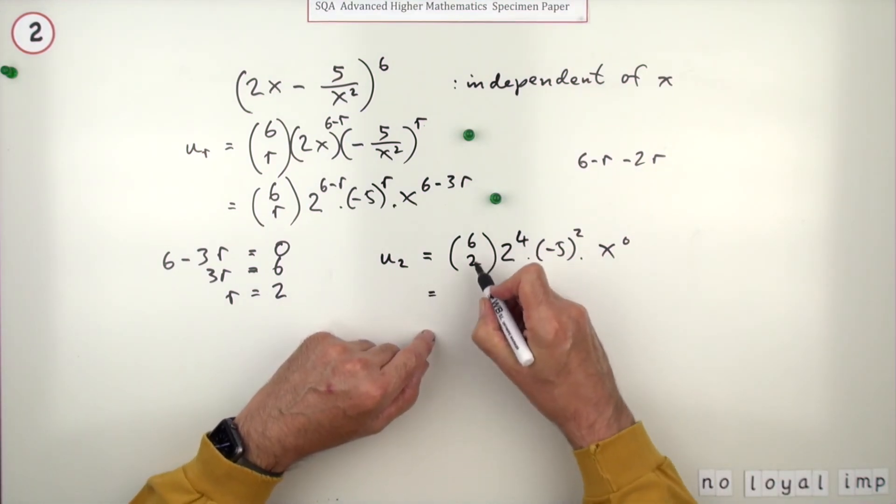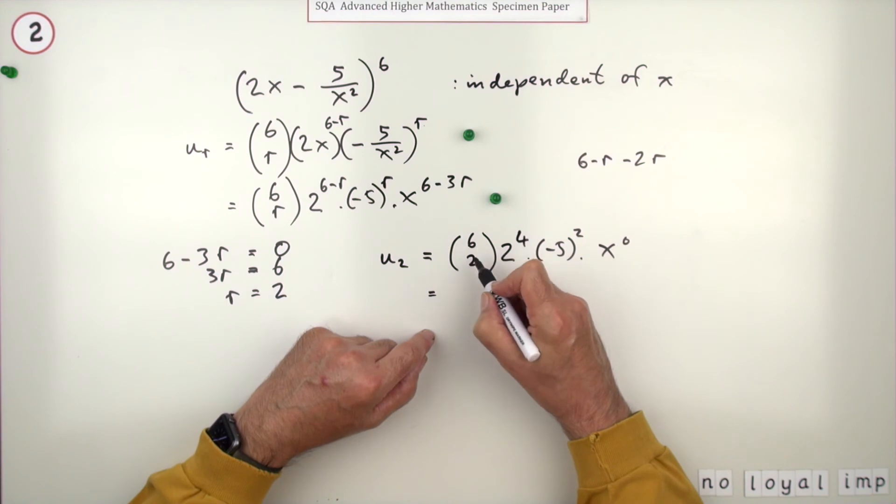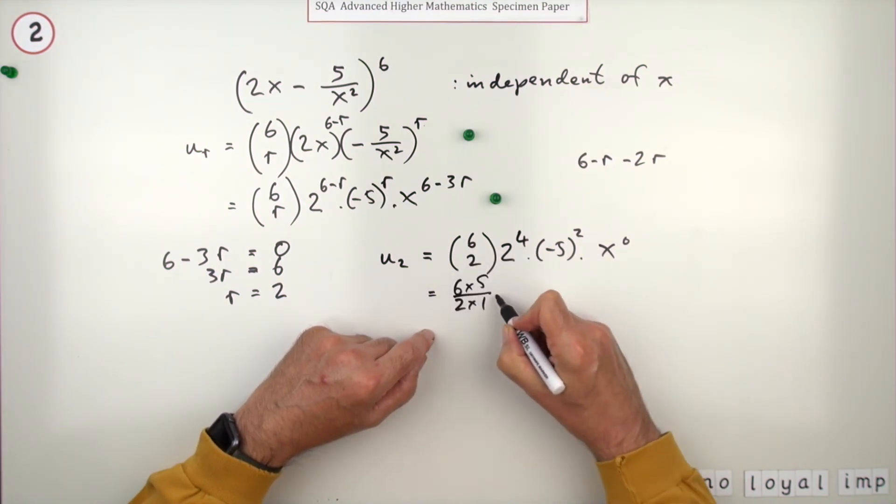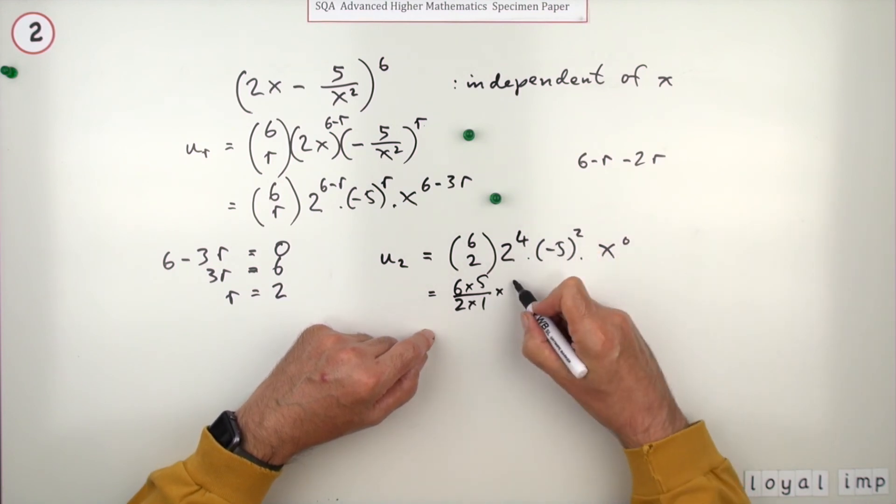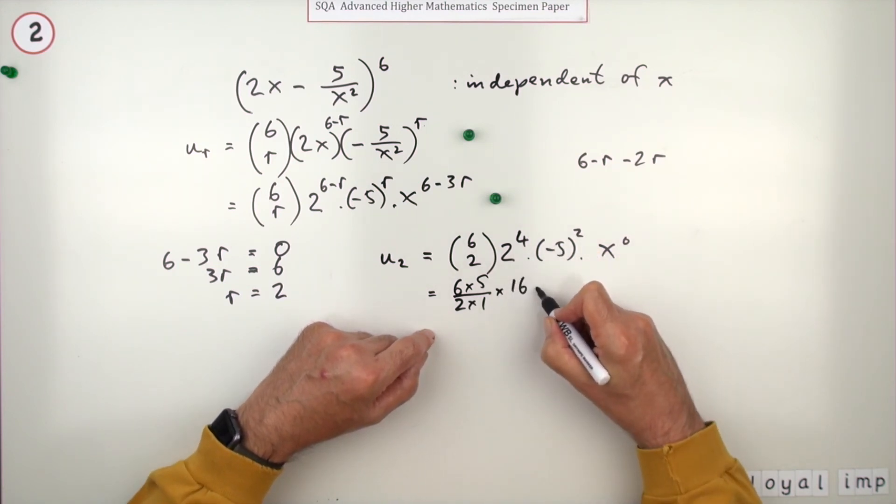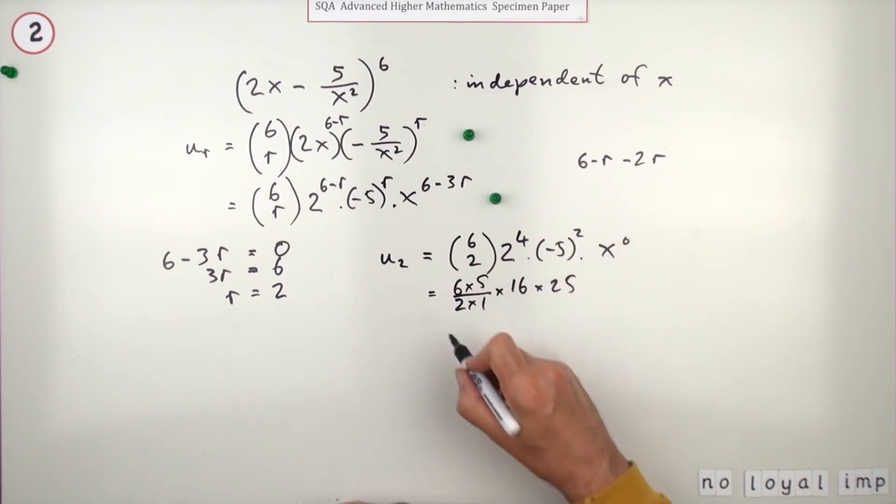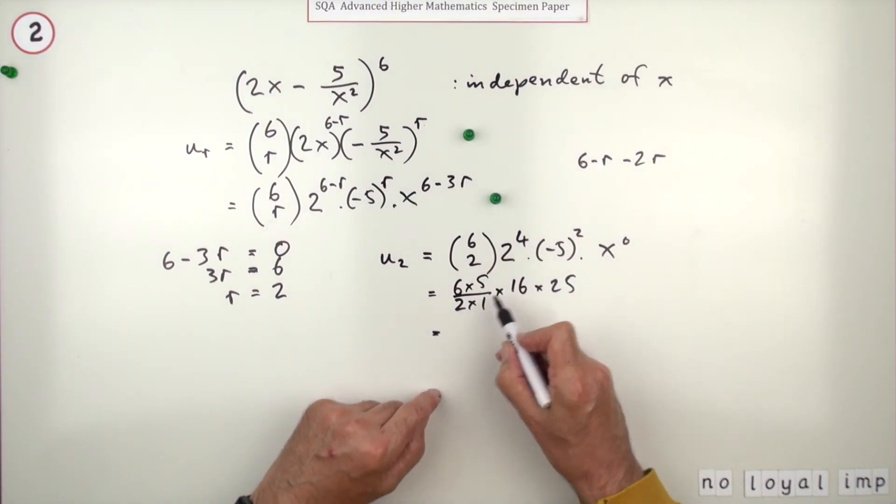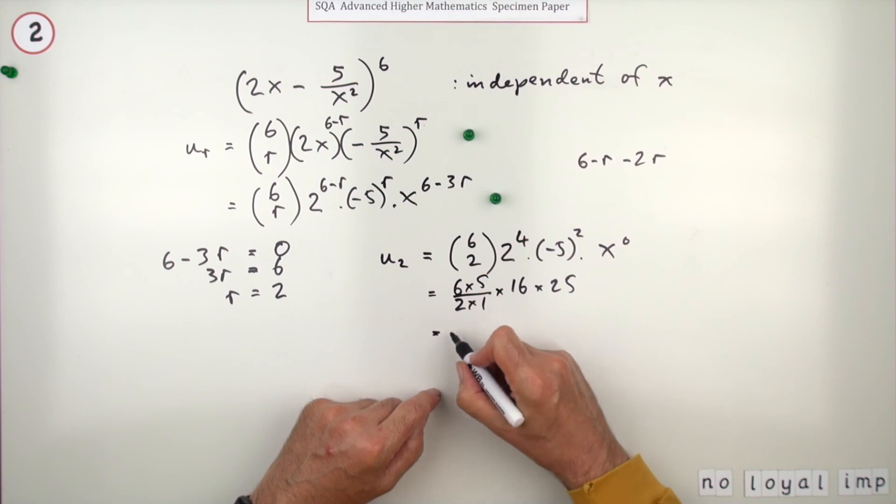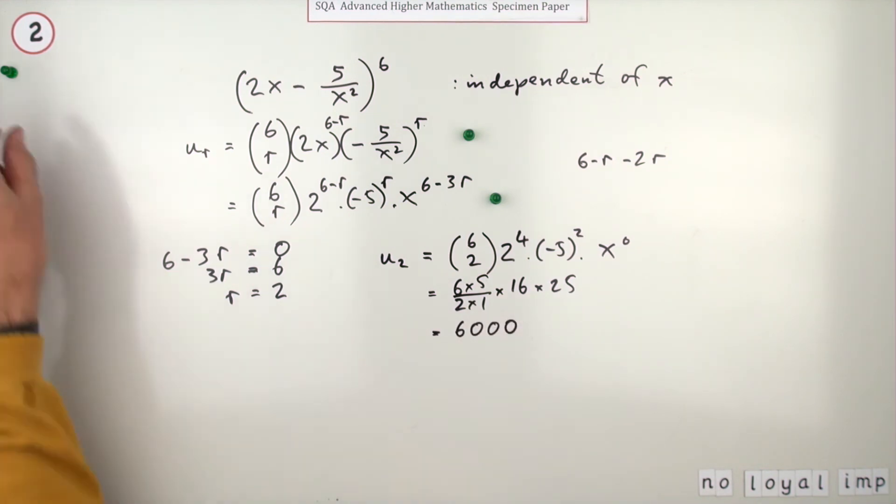Maybe I'll just write it out. 6C2, many ways of choosing two from six, that's 6 times 5 over 2 times 1. 2 to the power four, just put that straight down: sixteen. Negative five squared is twenty-five. And of course that's just one. So that's going to be two into sixteen goes eight. Eight twenty-fives are two hundred. Five times that's a thousand. Six times a thousand is six thousand. And there's a third mark.